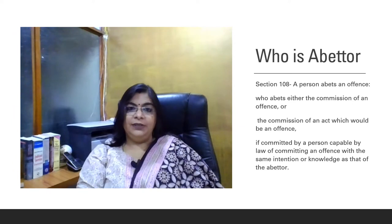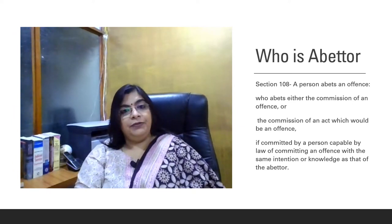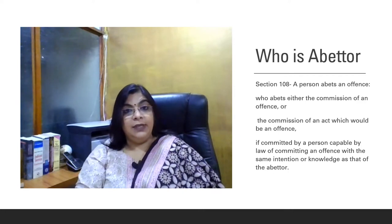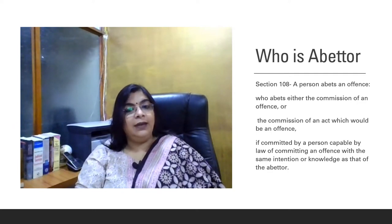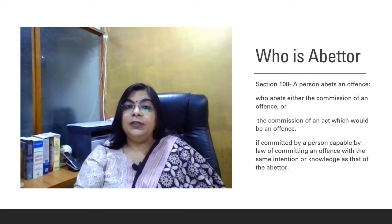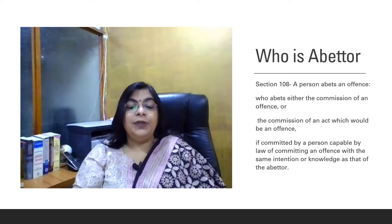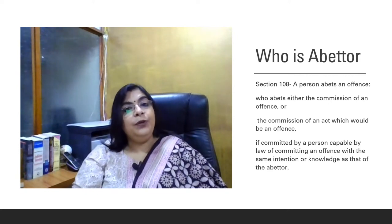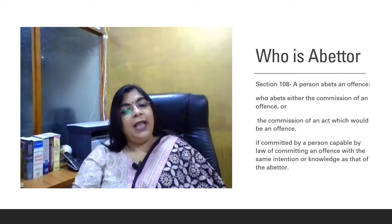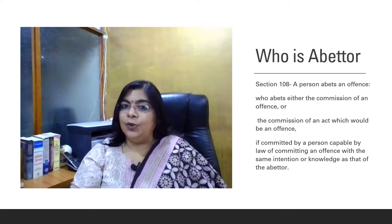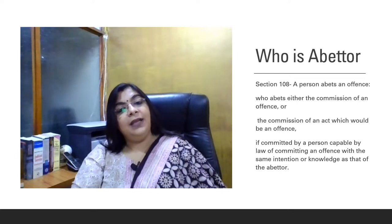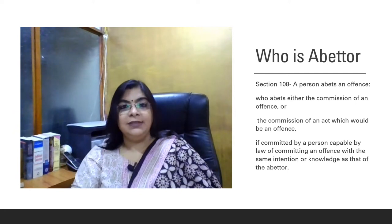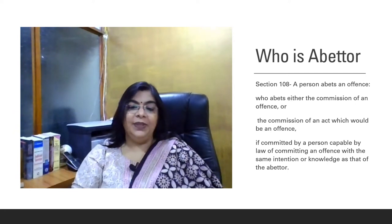This is the first essential. The second essential is that if a person is abetting another person for any act of commission or omission, that particular act must be stated as an offense under IPC. If the act for which the person is abetting is not an offense under IPC, then it won't be abetment and thereby the person who is abetting is not an abettor. So it is necessary that the person must abet another person for any offense mentioned under IPC.